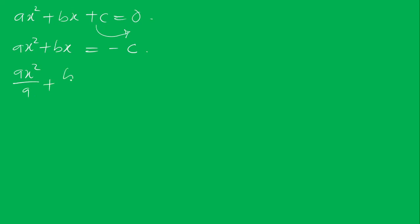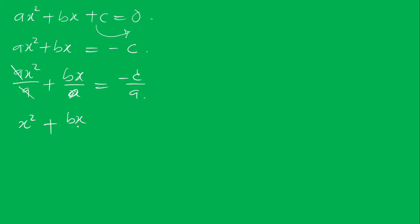Now dividing all terms through by a, we have ax² over a plus bx over a equals minus c over a. This cancels to give x² plus bx over a equals minus c over a.